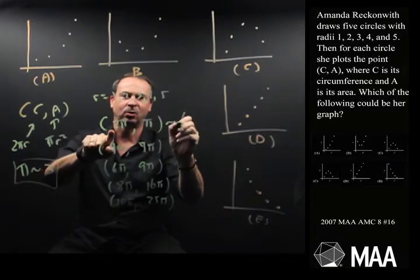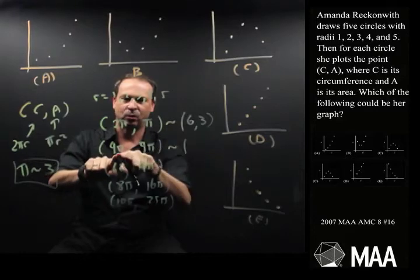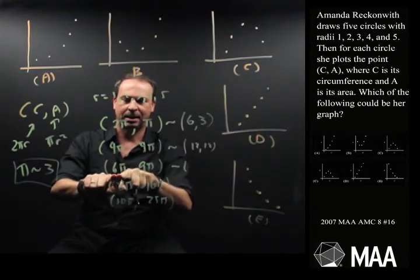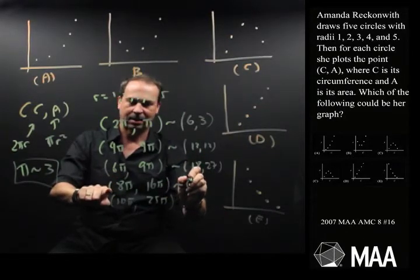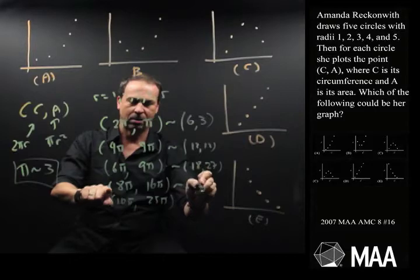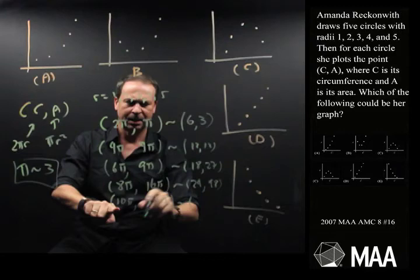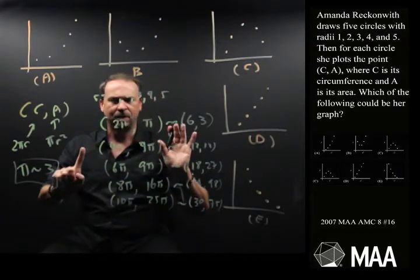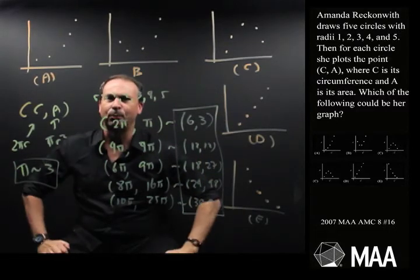2 times 3 is 6, 3. And this number is about 12, 12. And this number here is about 18, 27. And this is about 3. So 24, 48. This number is getting really big. Oh, and this one is about 30, 75. All right. At least I know this is really crude, but it gives me an approximation.